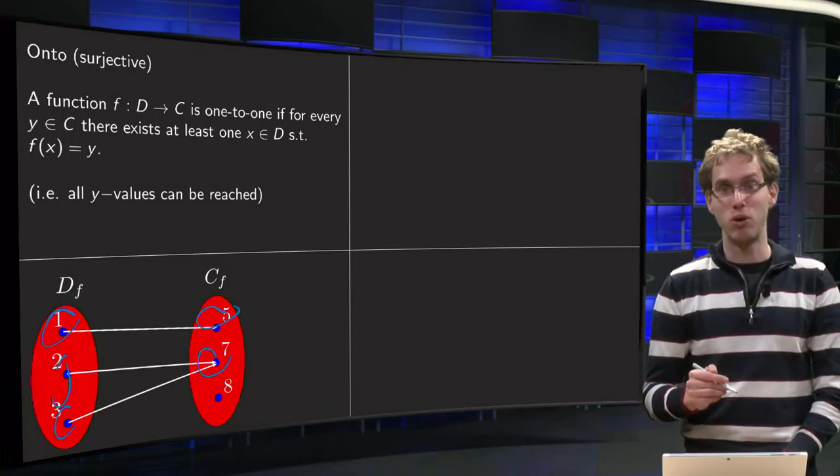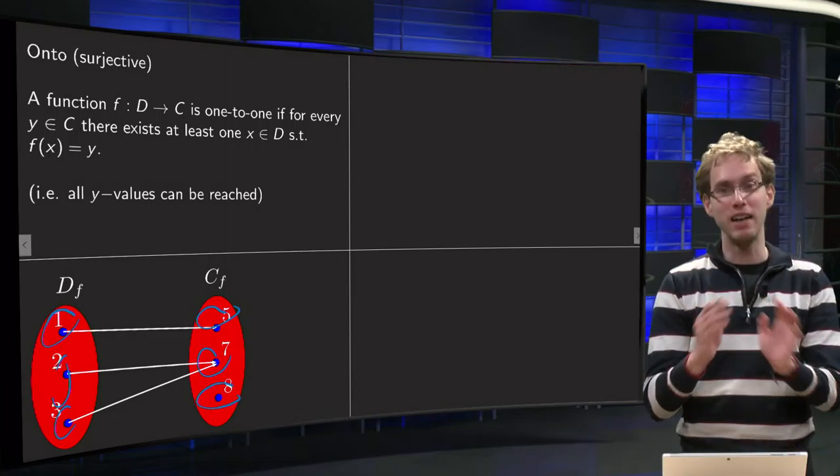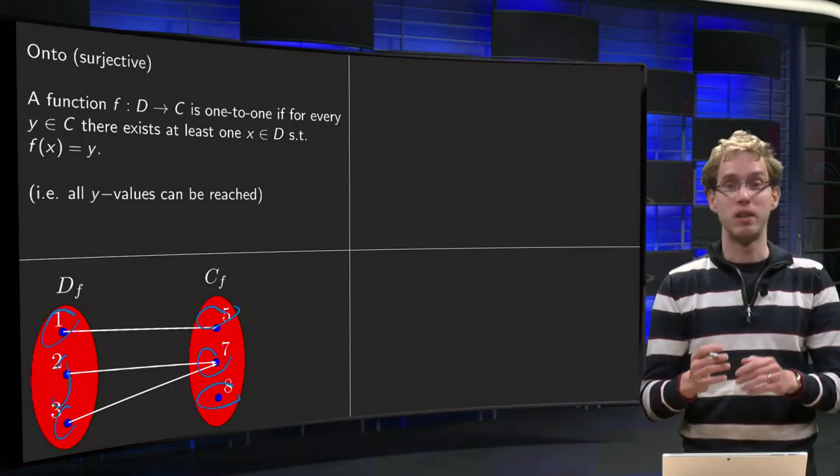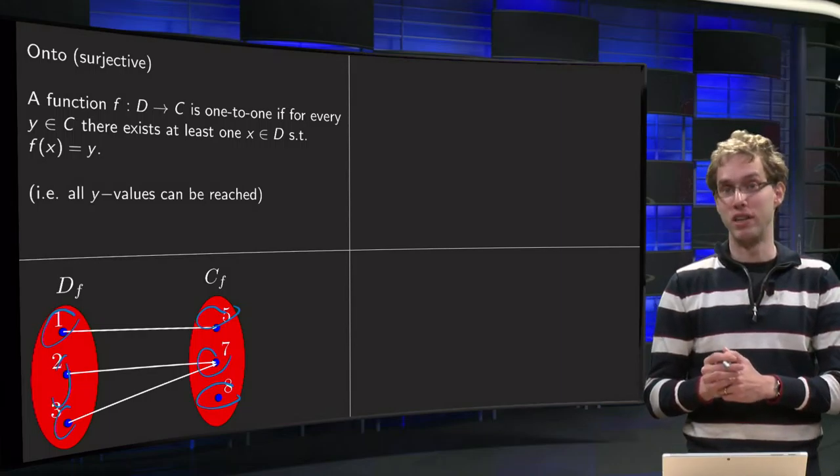But then we turn to our last value, the poor 8, cannot be reached by any number in the domain. And that means that our function is not onto because you cannot reach all numbers from the codomain. The 8 spoils the fun here.